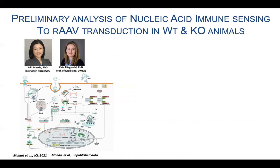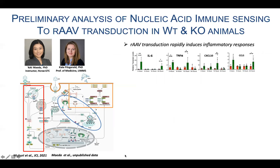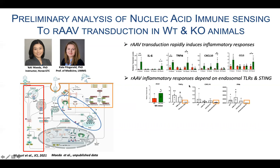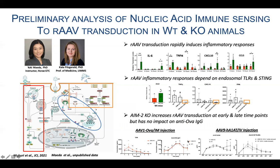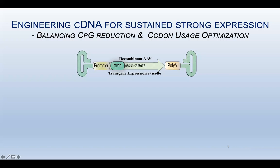I would like to show some primary analysis of nucleic acid immune sensing in AAV transduction in wild-type and knockout animals. Work was done by my colleague Yuki Maida and my collaborator. We primarily focused on three main pathways of DNA sensing. We found that AAV transduction rapidly induces inflammatory responses in wild-type animals. We also found that AAV inflammatory response depends on endosomal TLRs and STING pathways, demonstrated by transduction in different knockout animals. AAV MAVS knockout increases AAV transduction at early and late time points, but has no impact on anti-drug antibody IgG response, as shown by AAV1 muscle transduction, as well as AAV9 and AAT-IV injections.